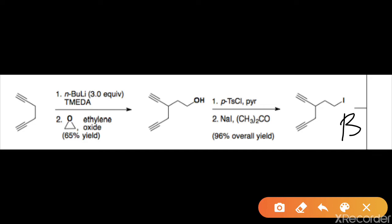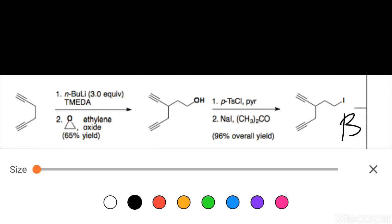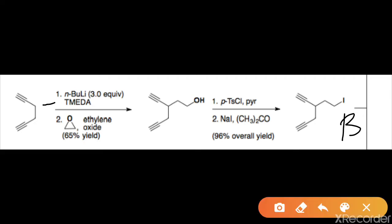They started with 1,5-hexadiyne — a six-carbon compound with triple bonds. They used n-butyl lithium in the presence of TMEDA, which is tetramethylethylenediamine. TMEDA coordinates with lithium and forms a strong base. This generates a carbanion that is stabilized by conjugation. That carbanion then attacks ethylene oxide, and the epoxide opens up.